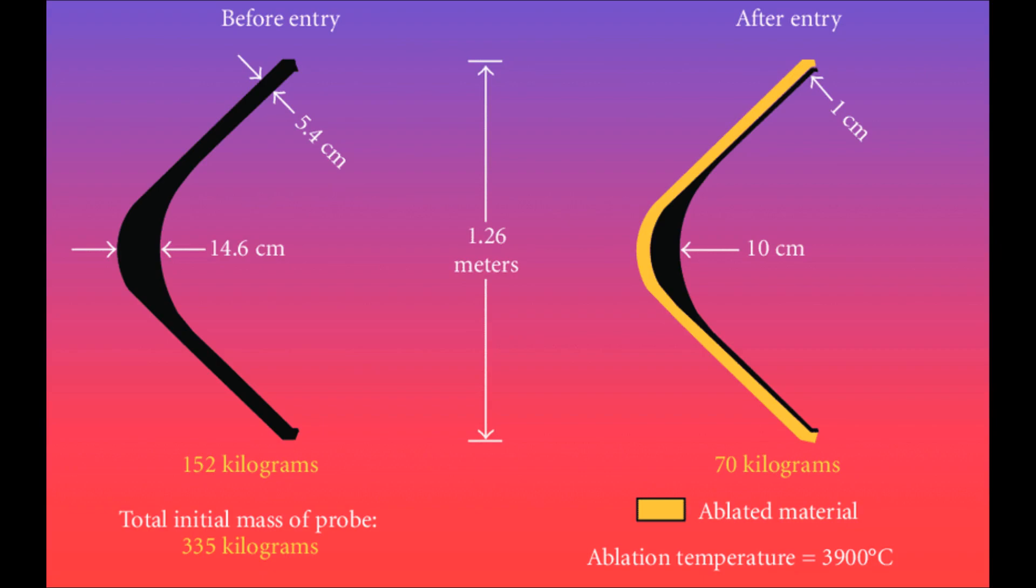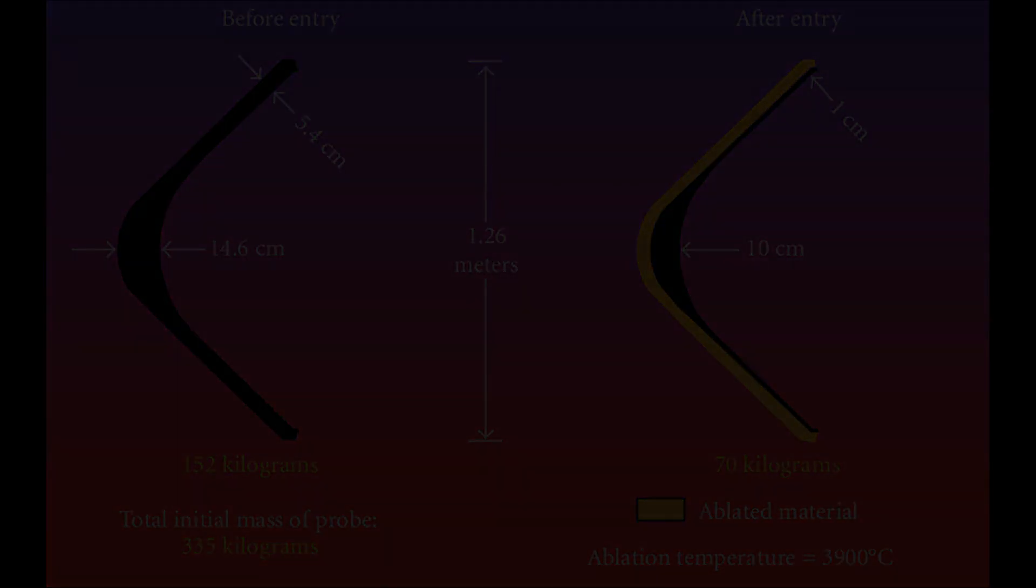Remember, the Galileo probe entered Jupiter at 47 kilometers per second. At these kind of speeds, the deceleration from drag becomes a very significant design concern. Making the heat shield more pointed reduces the drag somewhat. Even with this low drag shape, Galileo experienced a peak deceleration of about 350 Earth Gs.